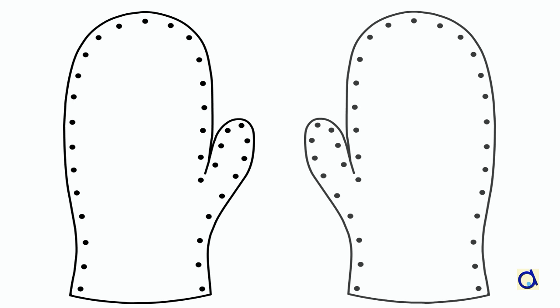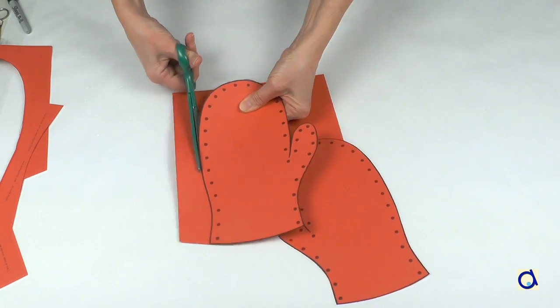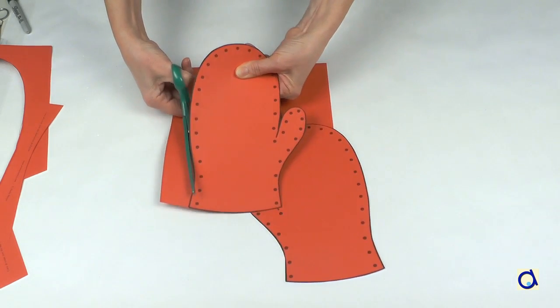Print the pattern of the mittens or trace it on construction paper of a color of your choice. To make a complete mitten, you must reproduce and cut out both sides of the mitten.